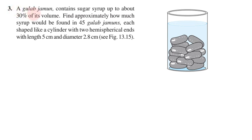Problem No. 3: A globe jamun contains sugar syrup to about 30% of its volume. Find approximately how much syrup would be found in 45 globe jamuns, each shaped like a cylinder with 2 hemispherical ends, with length 5 cm and diameter 2.8 cm. One globe jamun contains 30% of its volume as syrup.